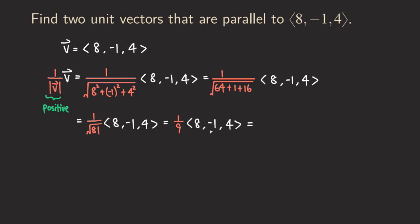So now we basically have the answer — we just multiply each component by one over nine. So we get eight over nine for the first component, negative one over nine for the second, and four over nine for the third. This vector points in the same direction as V and it's a unit vector, because we divided by its own magnitude. So this is one of the answers.